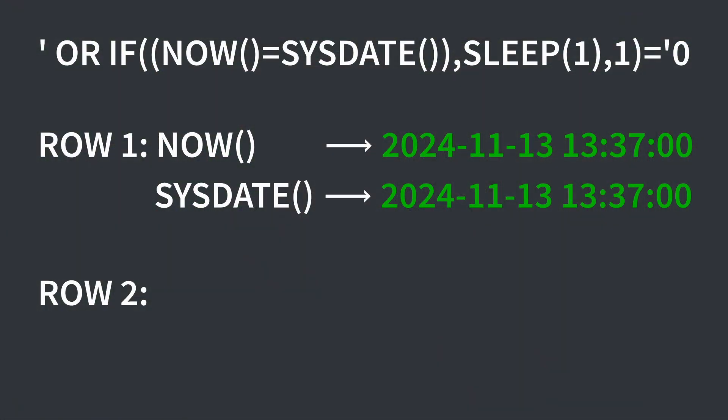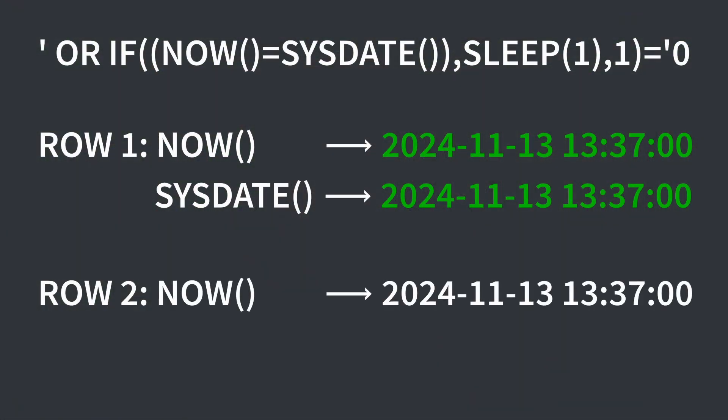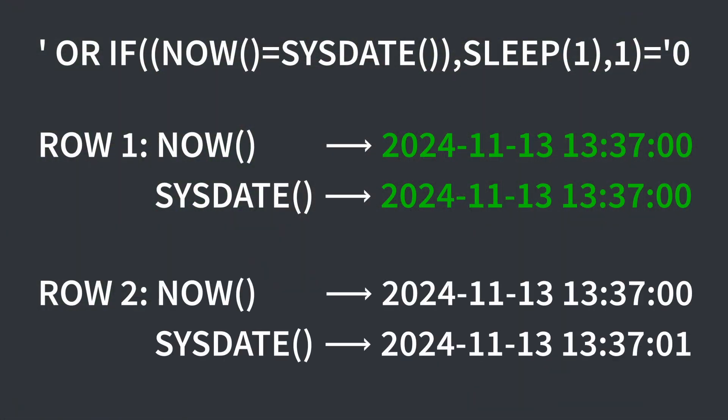The IF function is going to be evaluated for every single row in the table, one by one. On the first row, the return value of NOW and the return value of SYSDATE are the same, since the statement has just begun to be executed. That means the SLEEP function runs for one second, and we get OR 0 equals 0, which is true, so the first row is returned. Something different happens when the second row is evaluated — the database just slept for one second, but we're in the middle of executing a statement, so the return value of NOW is no longer equal to SYSDATE. In fact, it's one second behind. This means a one is returned by the IF function, resulting in OR 1 equals 0, which is false, and the second row is not returned.